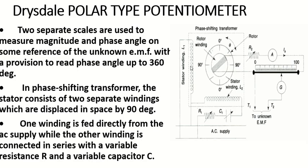Two separate scales are used to measure the magnitude and phase angle. In the phase shifting transformer, the stator consists of two separate windings. This is an important part of the Drysdale potentiometer: the stator and rotor winding. One stator winding is directly connected to the AC supply, but the second stator winding is connected to the first stator winding through an RC circuit. Using an RC circuit, you are connecting the second stator winding across the AC supply.